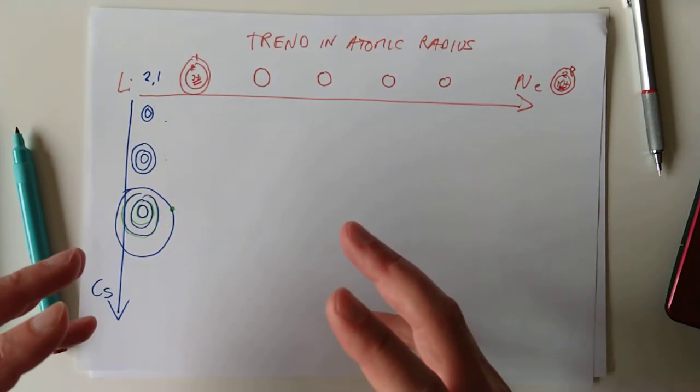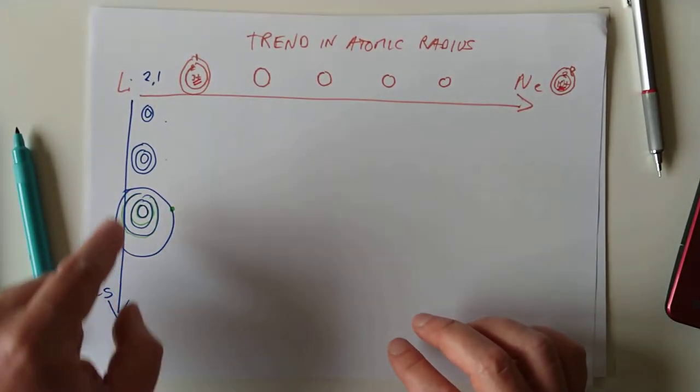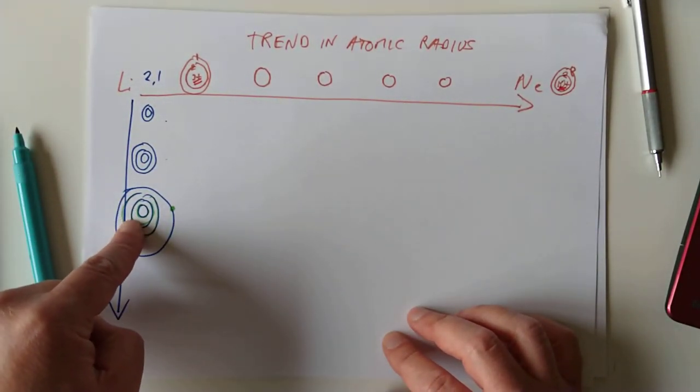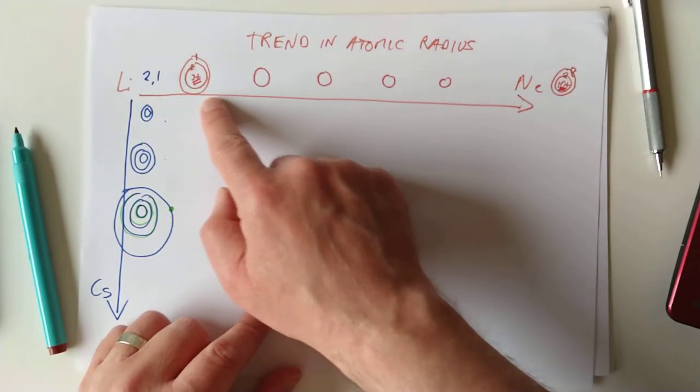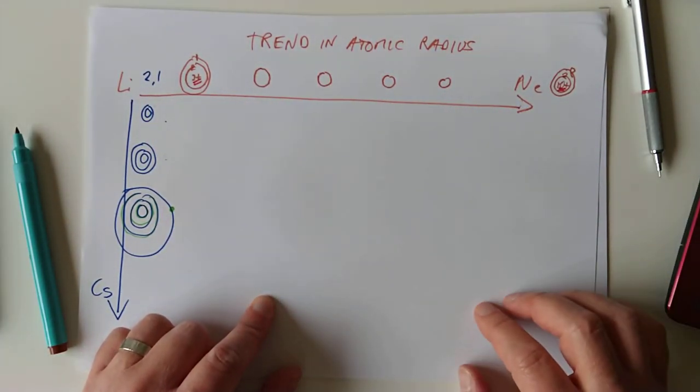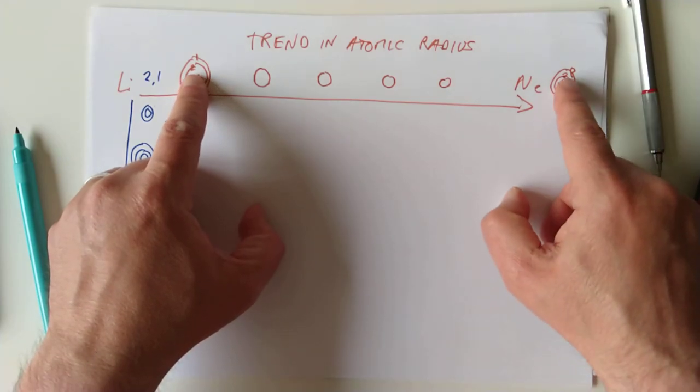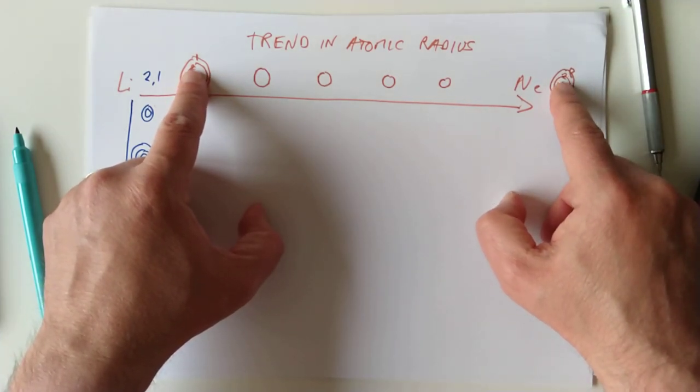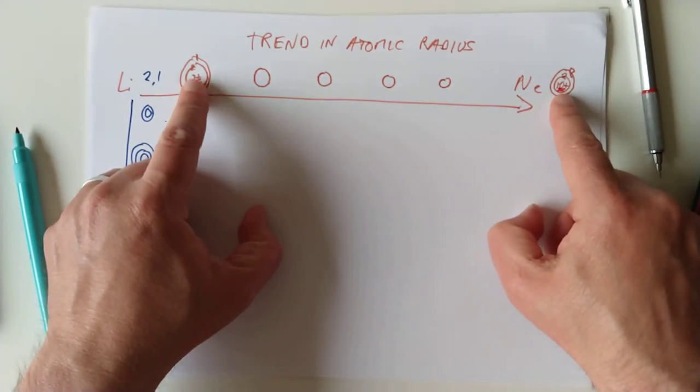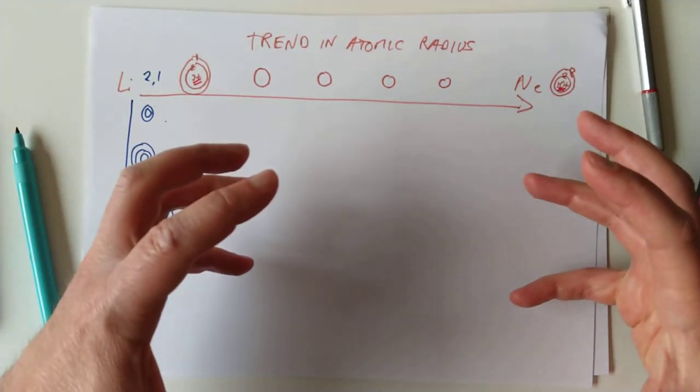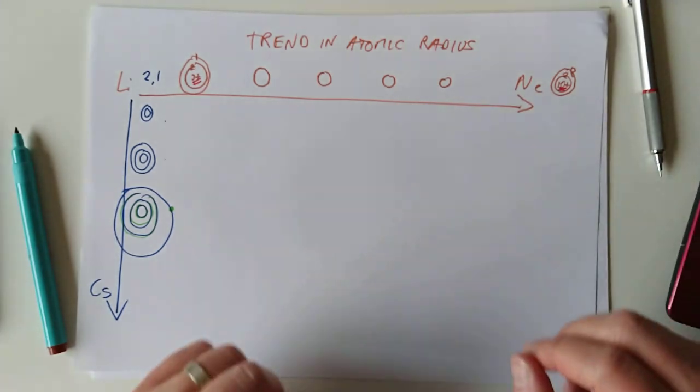So the outer electron sees less and less positive charge effectively as you go down, despite there being many more protons, ironically. So there's an increase in size as you go down, and there's a slight decrease in size as you go across because there are no extra layers of electrons, therefore no extra shielding, and you have an increased nuclear charge. There's more protons in the centre grabbing your electrons and crushing them in slightly.